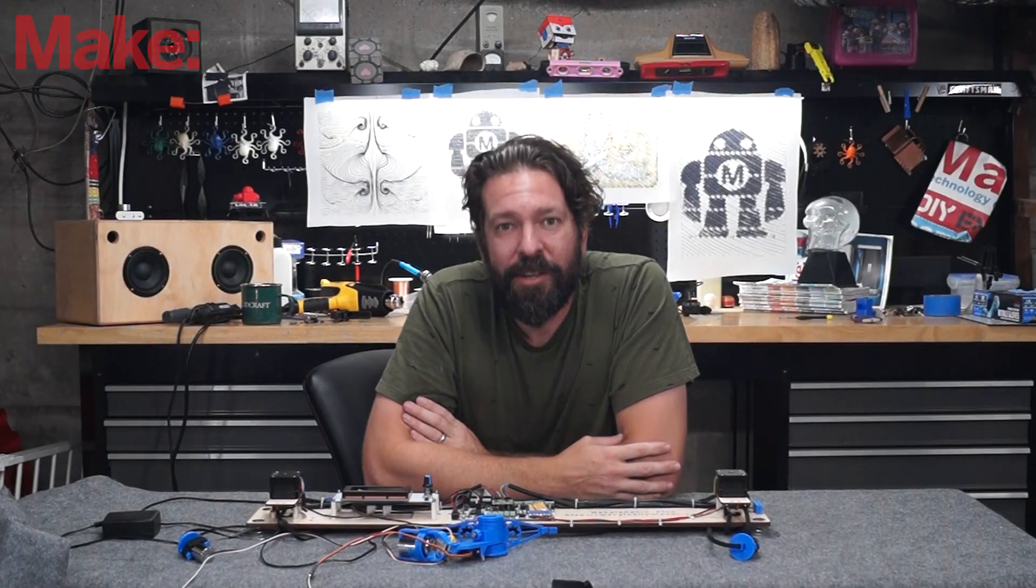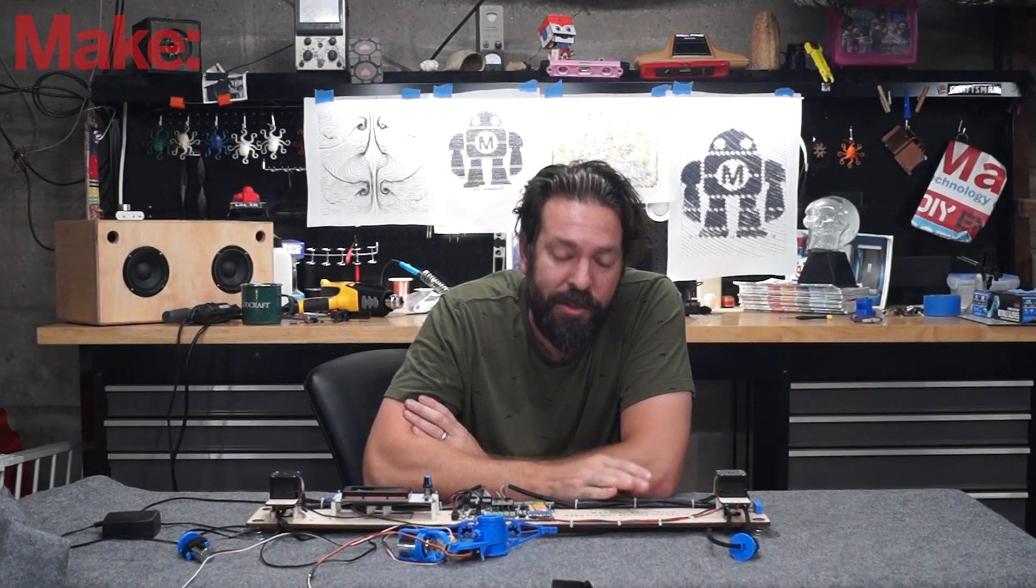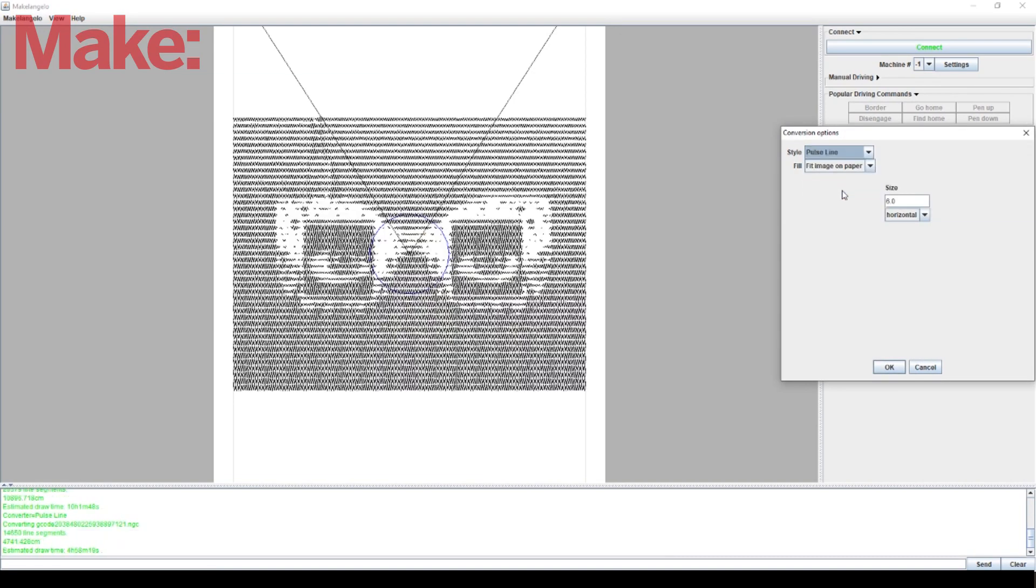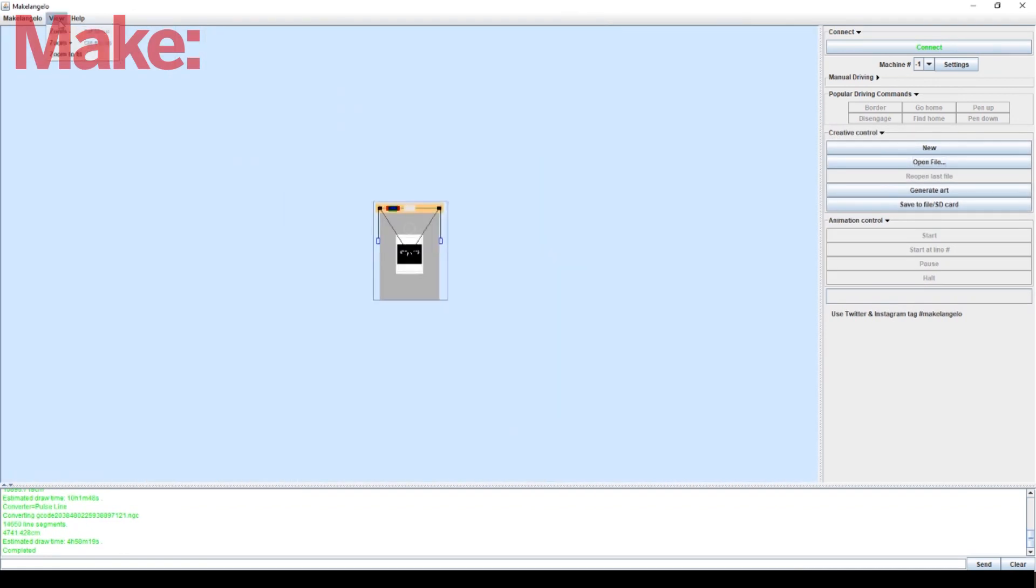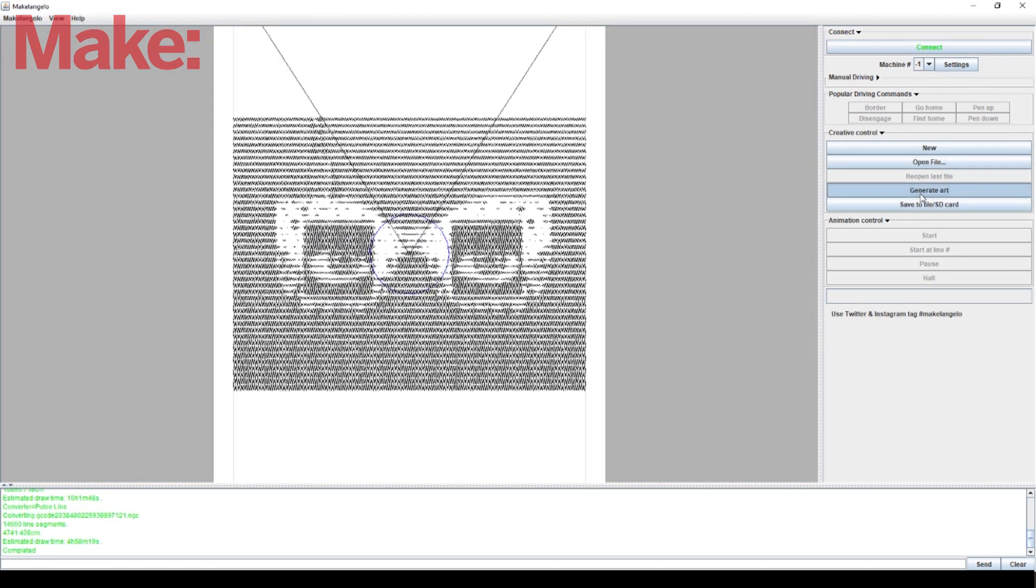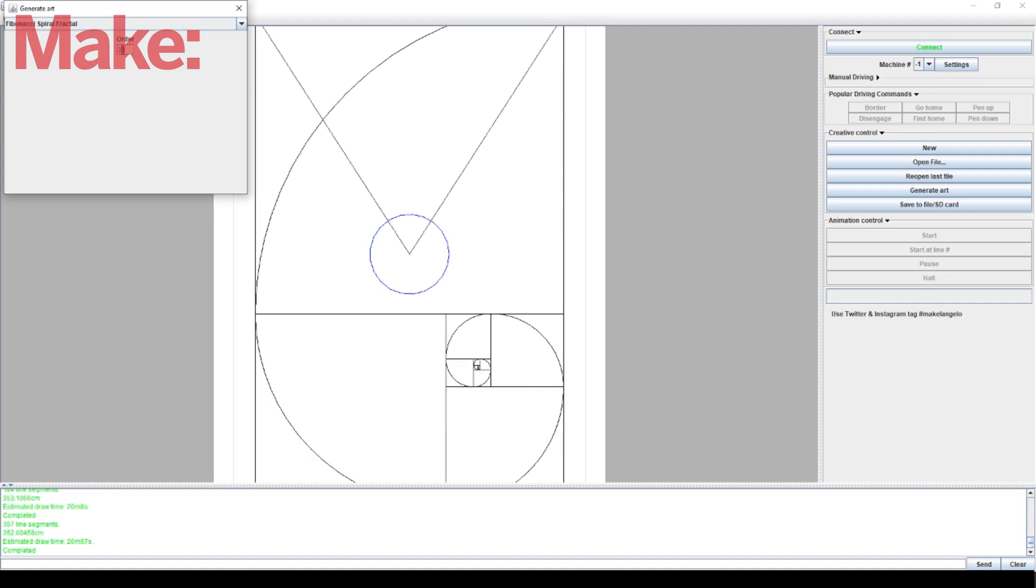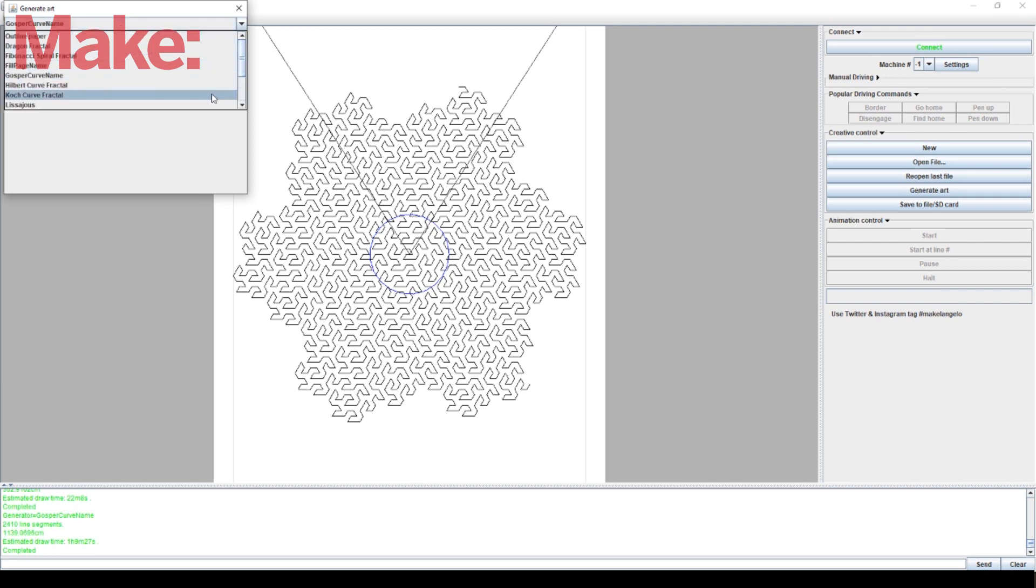To operate this you're going to use the software you can get from Marginally Clever Robotics. It has a few different modes. You can load an image in and convert it to what the plotter uses, and there are different methods of generating the image. There's zigzag lines and spiral lines and even a test version of a CMYK one built in as well.